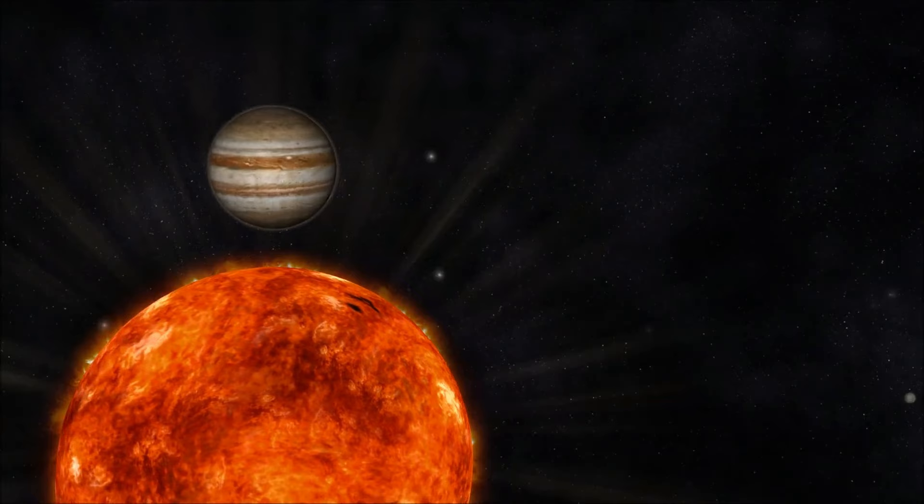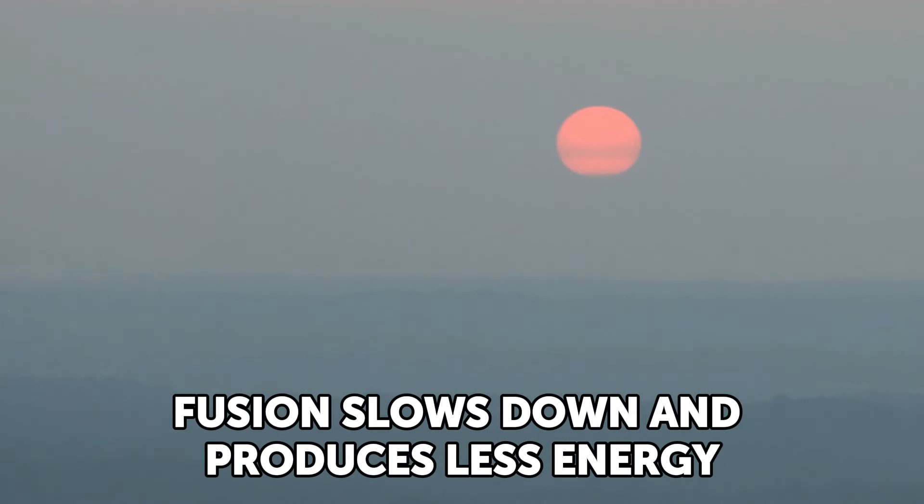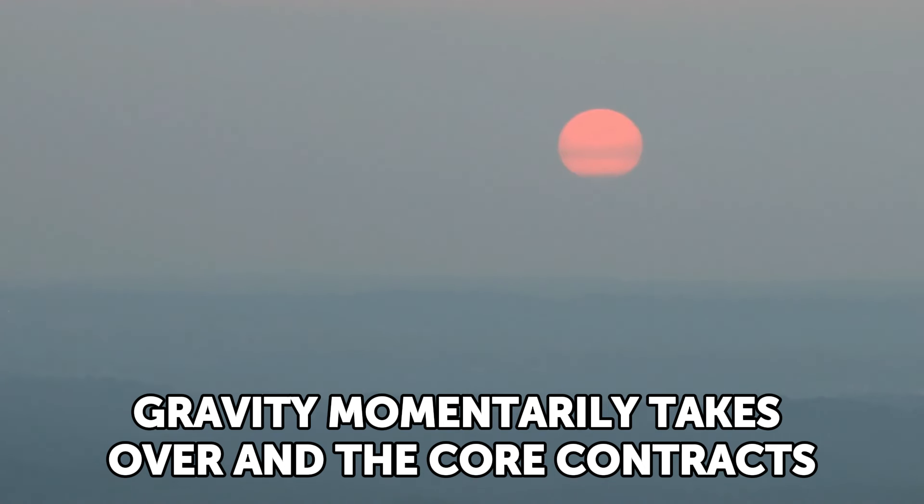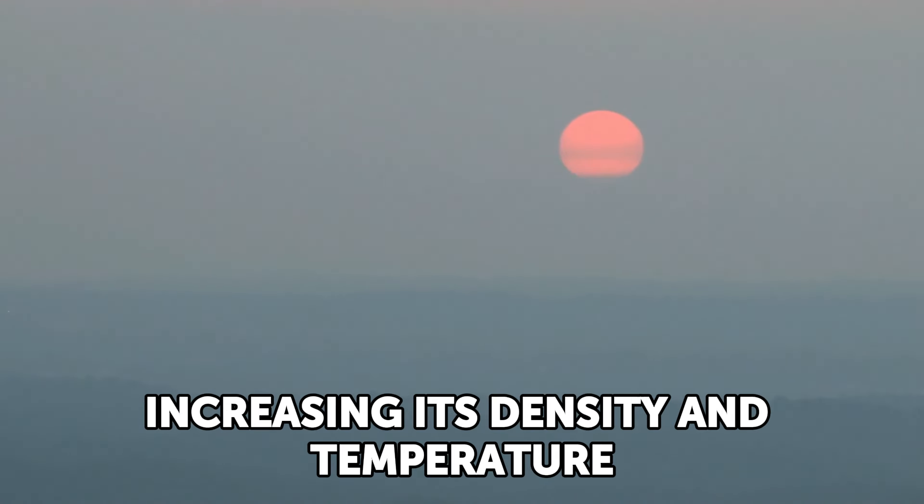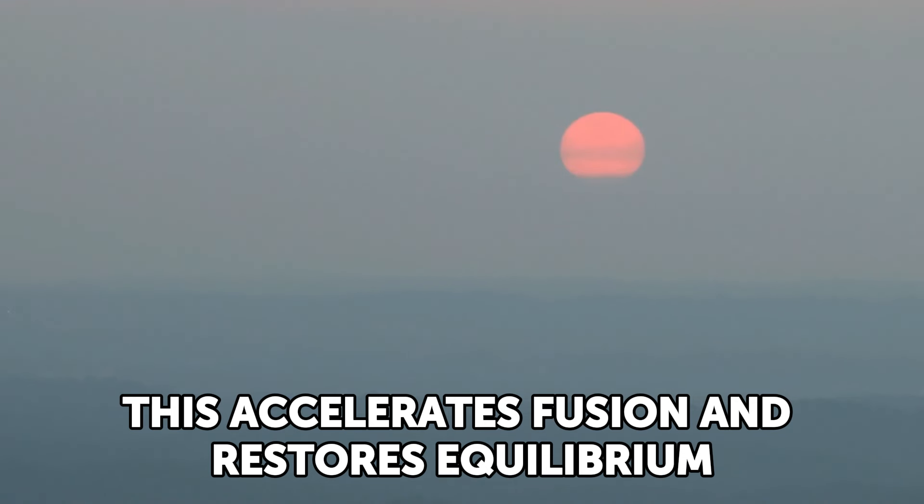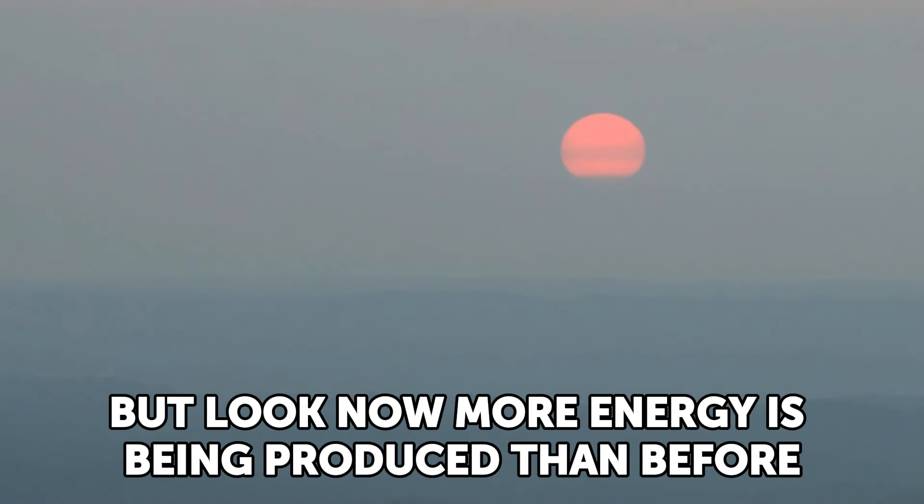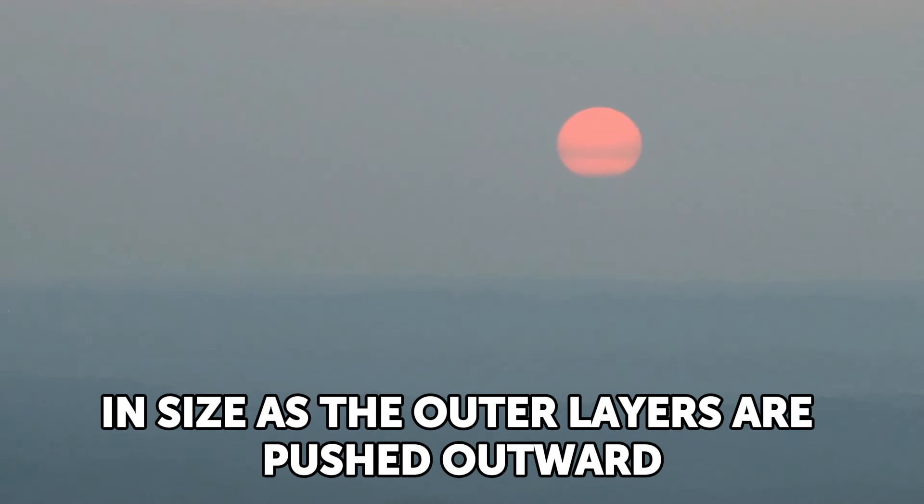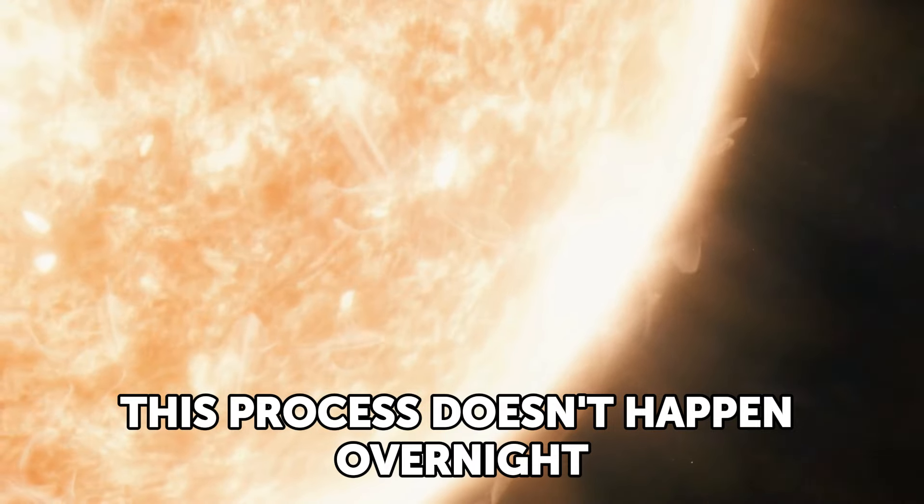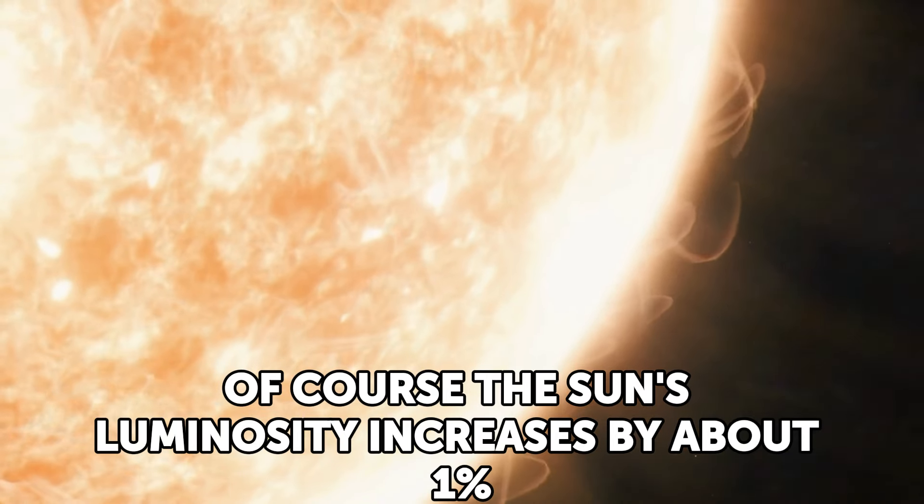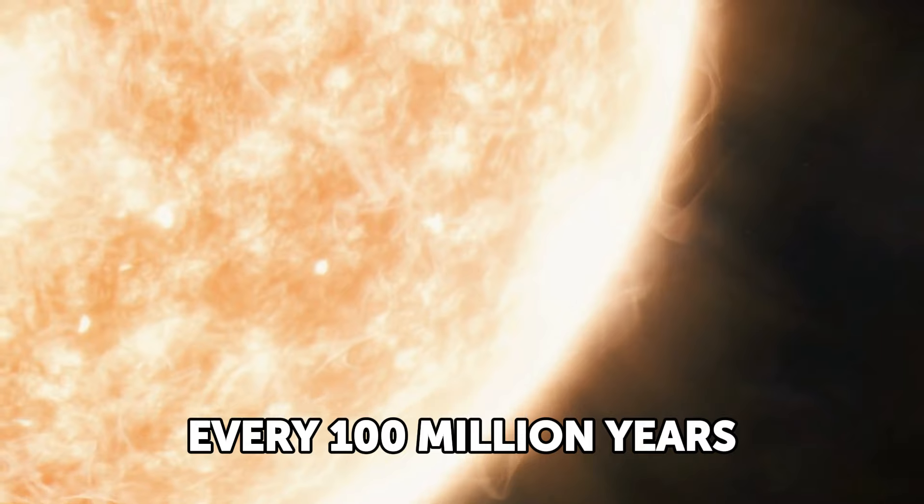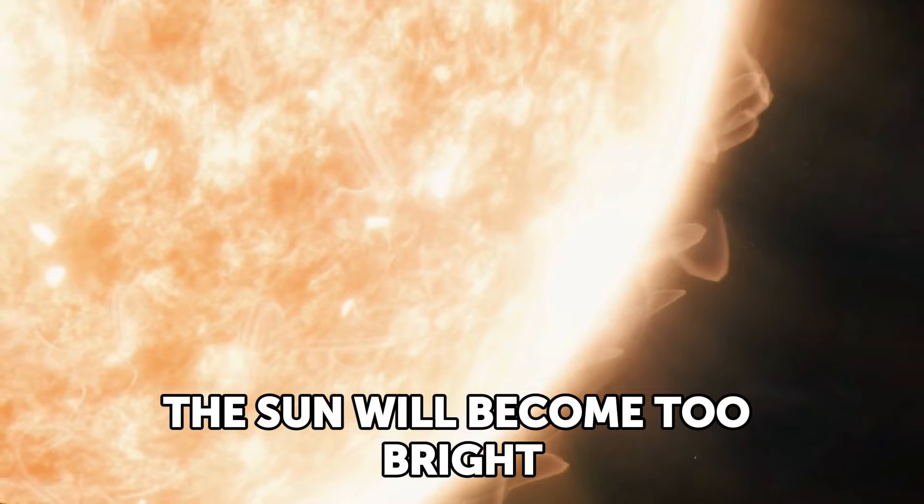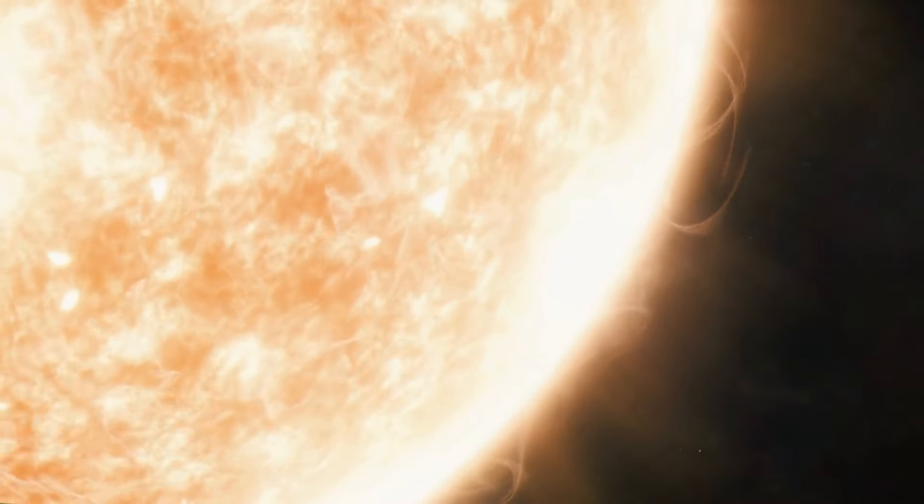Even before that, we will experience changes on Earth as the Sun depletes its fuel. It becomes gradually brighter. Indeed, as there is less fuel, fusion slows down and produces less energy. Gravity momentarily takes over and the core contracts, increasing its density and temperature. This accelerates fusion and restores equilibrium. But now more energy is being produced than before. This extra energy makes the star grow in brightness and size as the outer layers are pushed outward. The Sun's luminosity increases by about 1% every 100 million years, nothing we will notice in our lifetimes.